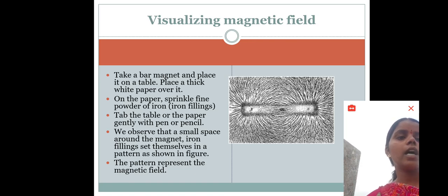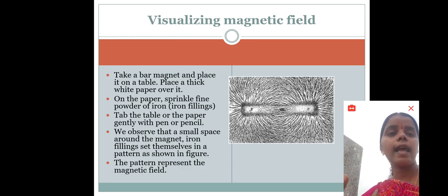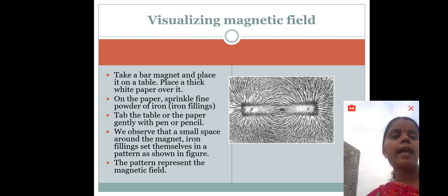See here, we can observe the north pole and south pole of the magnet. These lines are imaginary lines and these lines travel from north pole to south pole. These lines are called magnetic lines and these are imaginary lines.